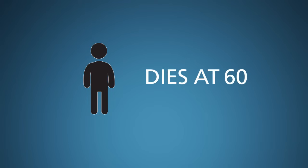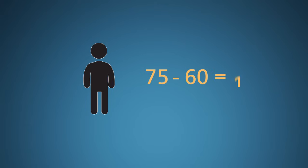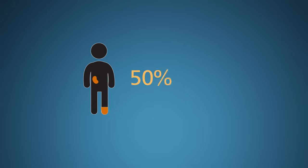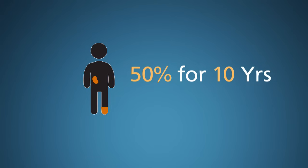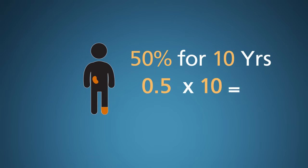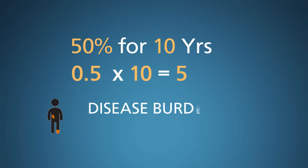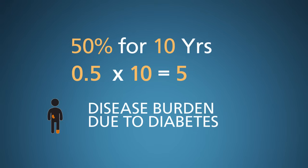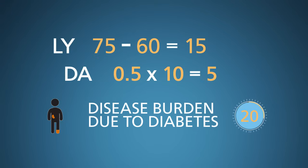Let's look at an example using adult onset diabetes. Let's say an individual dies at 60 years old instead of his life expectancy without diabetes of 75 years. That's 75 minus 60, so 15 DALYs incurred — that's the mortality part. Let's also say that the morbidity effects of adult onset diabetes, perhaps foot or kidney complications, rendered this individual 50% disabled for the final 10 years of his life. So, 0.5 times 10 years results in 5 more DALYs incurred. For this individual, the overall disease burden due to diabetes can be represented as 20 DALYs: 15 for mortality plus 5 for morbidity.